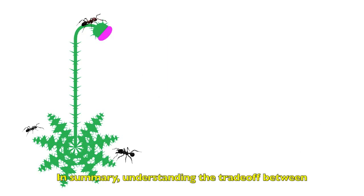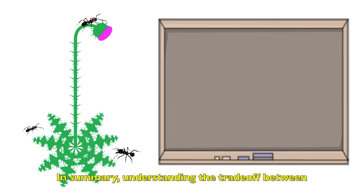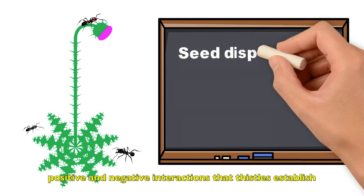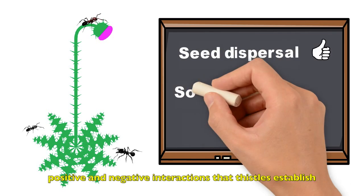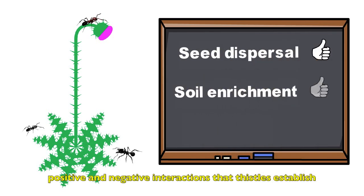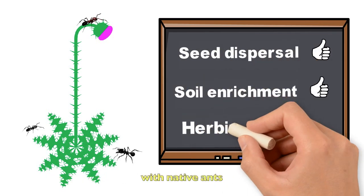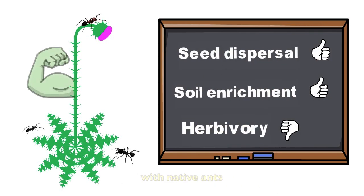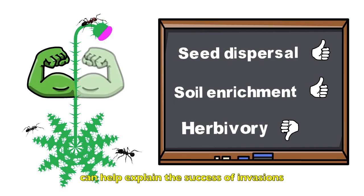In summary, understanding the trade-off between positive and negative interactions that thistles establish with native ants can help explain the success of invasions.